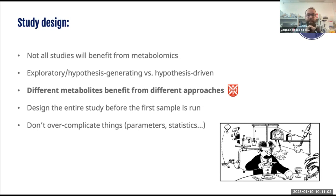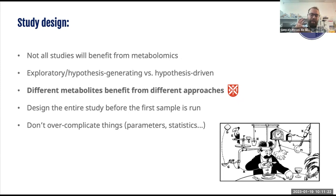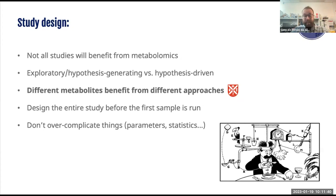It's very important to know that different metabolites benefit from different approaches throughout the entire process. One of the talks you'll hear later is going to focus solely on that — how to tailor the instrument to the study you actually want to go through. It's also very important not to overcomplicate things at any point in your study. There are a lot of moving parts and a lot of things that can go wrong, so it's best to keep it simple, especially when it comes to statistics — but obviously not too simple.